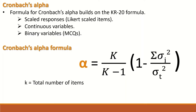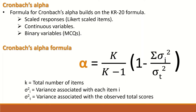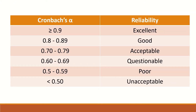In this formula, K represents the total number of items, the variance I represents the variance associated with each item, and the variance T represents the variance associated with the total scores. The Cronbach's alpha range and its corresponding reliability level are shown in the following table.